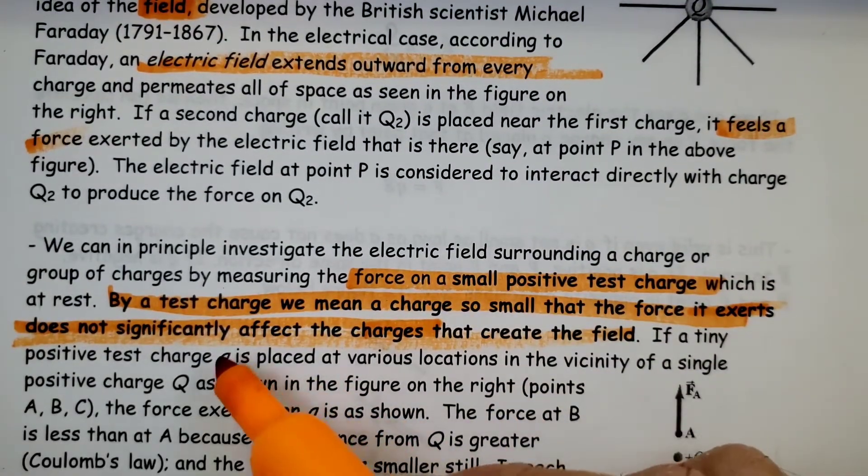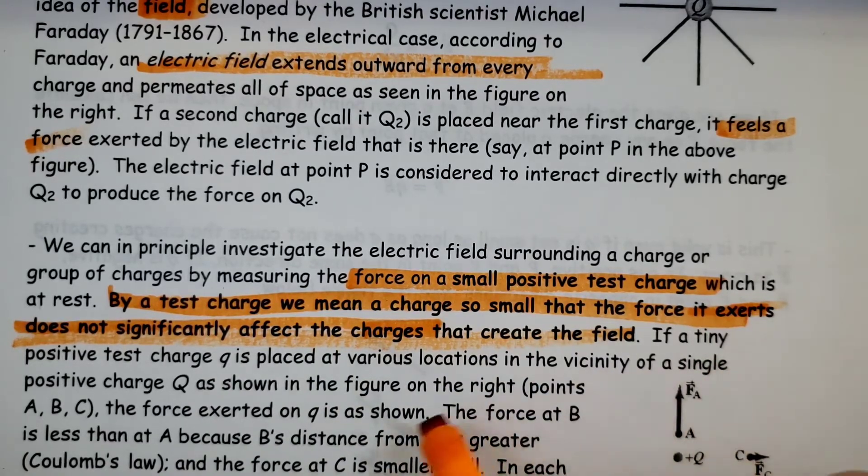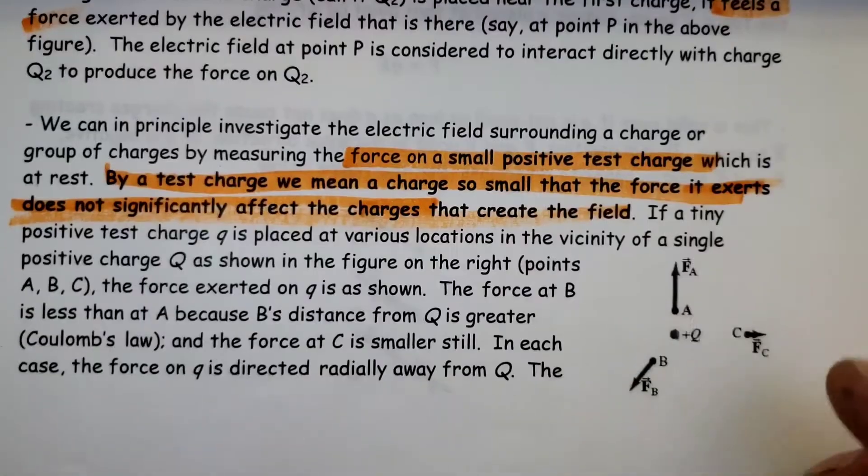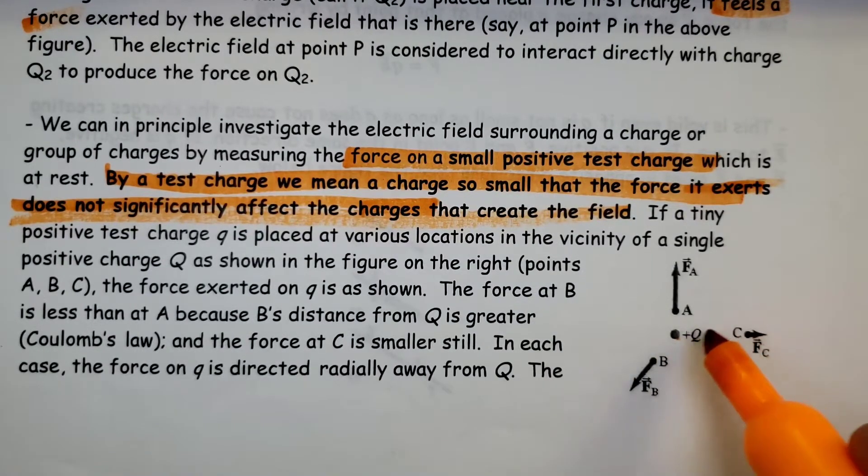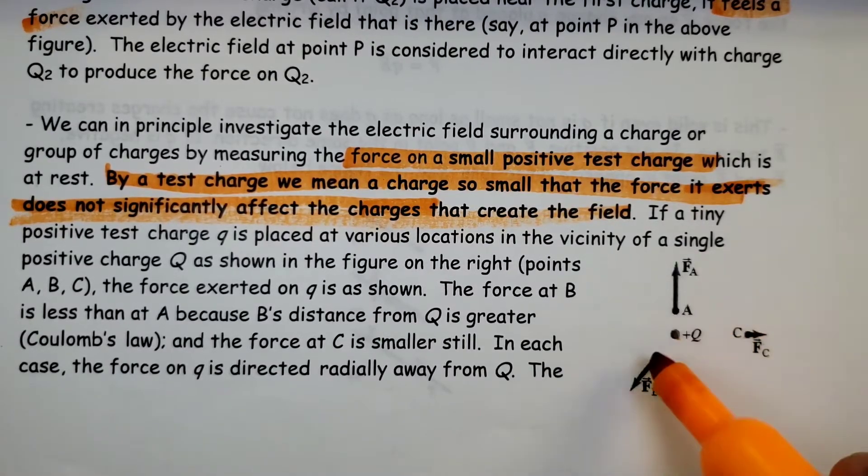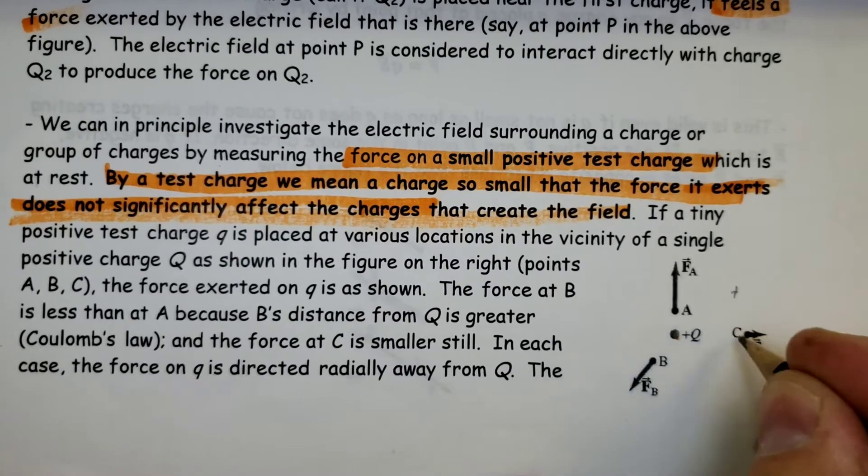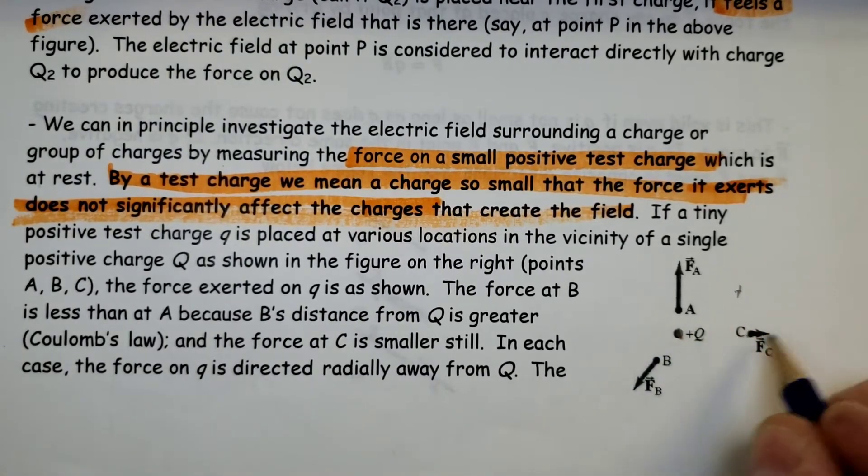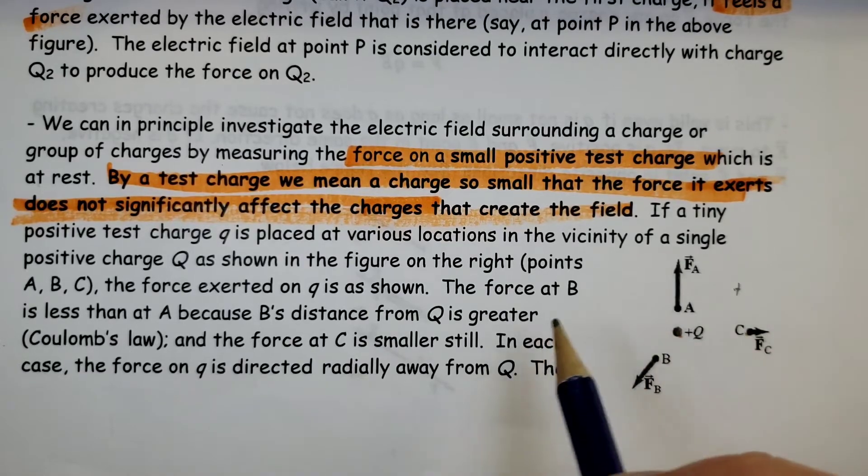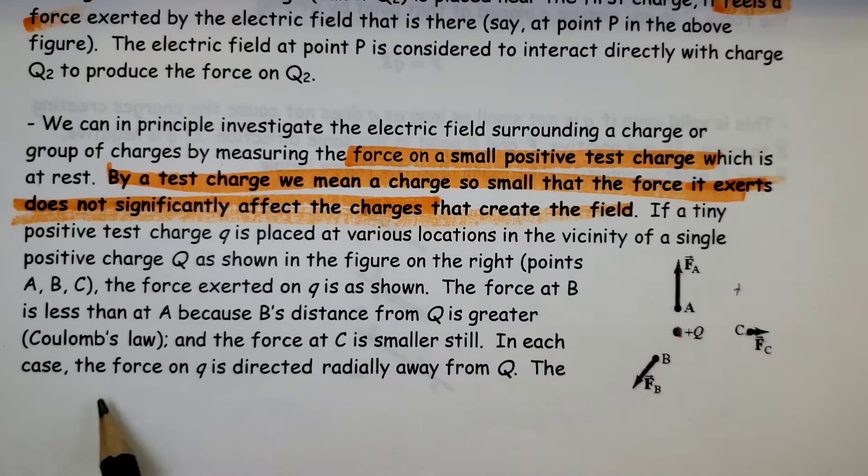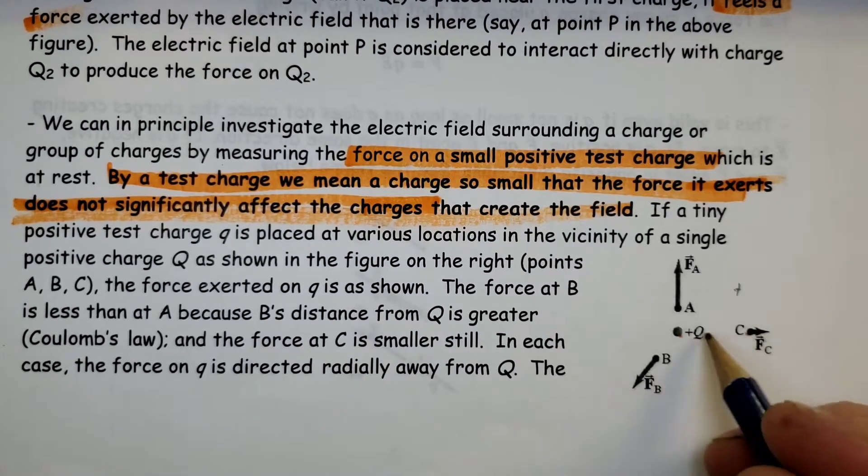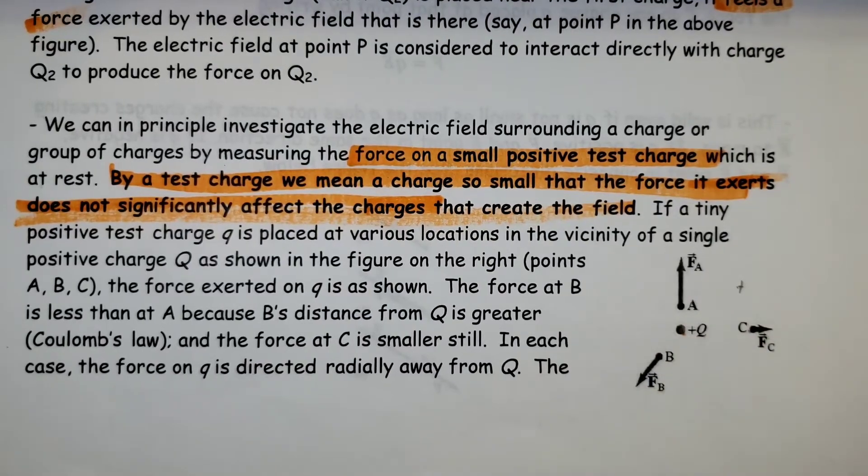If a tiny positive test charge, little q, is placed at various locations in the vicinity of a single positive charge, such as in this diagram, we can see that if I place it here, it's going to be repelled to the right. If I place it here, it's going to be moved up. Because A, B, and C represent regions in which I place a small positive test charge, I can infer that Q must be positive as well because it wants to be repelled in each of those locations.